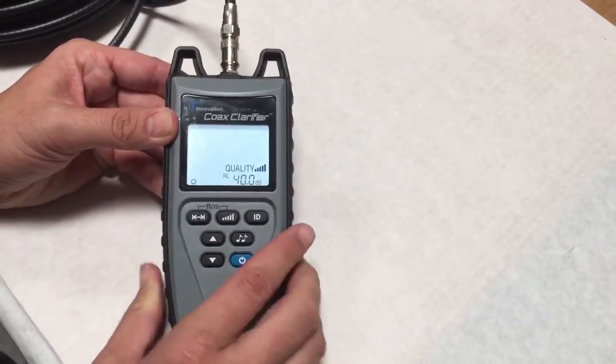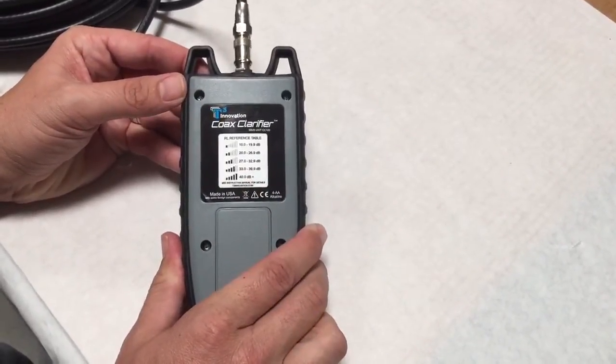You have a bar graph and DB level. On the back is a reference to tell you what all that means.